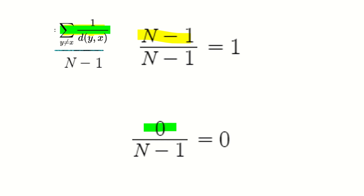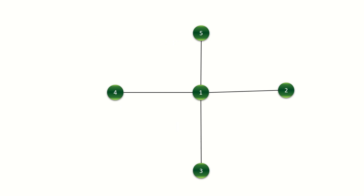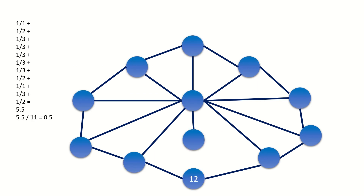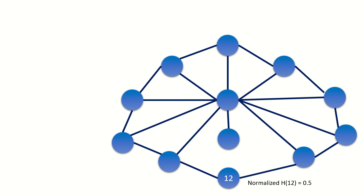Revisiting our earlier example, we can calculate the normalized harmonic centrality for vertex 1 in graph 1 and vertex 12 in graph 2. Vertex 1's normalized harmonic centrality is 1. Vertex 12's normalized harmonic centrality is 0.5. Much better! Our normalized harmonic centrality measure has correctly identified that vertex 1 is much more important to its graph than vertex 12 is to its graph.